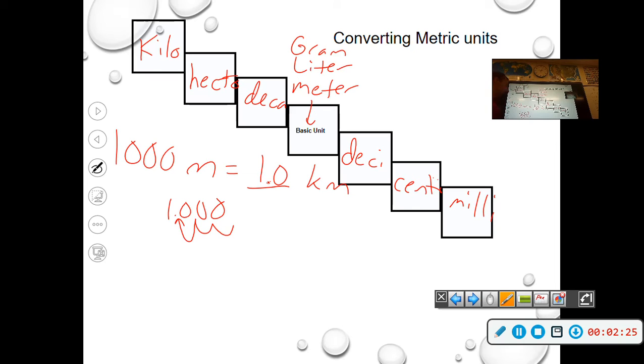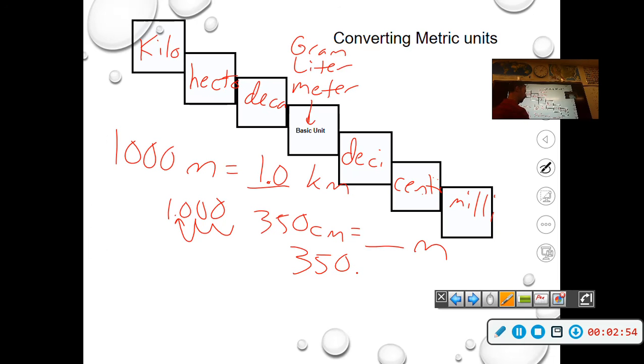Another example. Let's do 350 centimeters is equal to how many meters. So once again, find your prefix. In this case it's centi, and we are going to the basic unit, which is meter. So we're going to go one, two places to the left. So once again, you can write your number, that's what I always do, and then jump one, two places to the left.